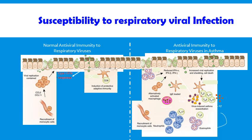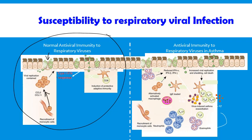That covers the immunopathogenesis behind the two diseases. Let's briefly touch on how asthmatic patients are more susceptible to respiratory viral infections. In a normal antiviral response, a virus comes in, monocytes are recruited, they gobble it up, present antigen in the lymph node, make Th1 and CD8 cells, get NK cells on board, and produce type 1 interferons which interfere with viral replication — so a relatively mild infection resolves quickly.